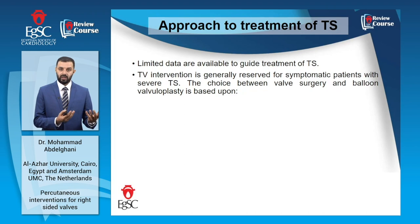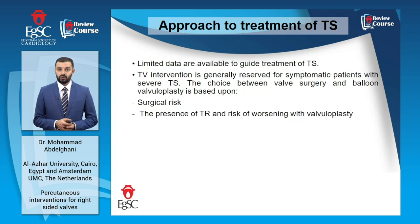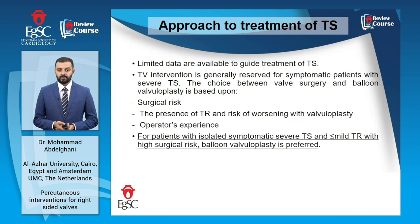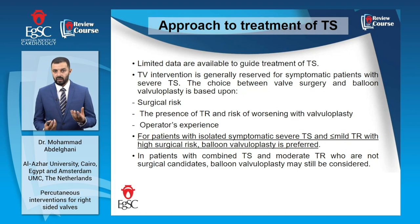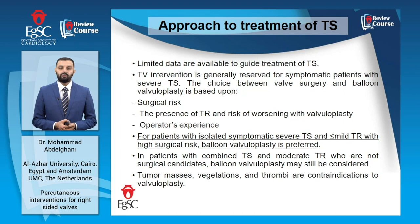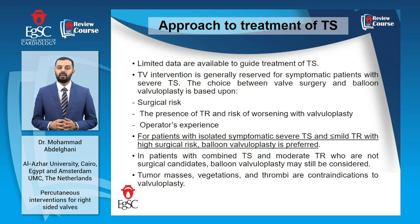The choice between surgery and balloon valvuloplasty should be based on surgical risk, the presence of TR and the risk of its worsening with valvuloplasty, as well as operator and center experience. In patients with high surgical risk and isolated symptomatic severe tricuspid stenosis associated with mild or less TR, balloon valvuloplasty is a straightforward decision. In all other scenarios, the decision should be individualized and discussed in detail between surgeons and interventional cardiologists within the heart team. Even patients with moderate TR in addition to severe tricuspid stenosis who are not suitable for surgery may still be considered for balloon valvuloplasty.